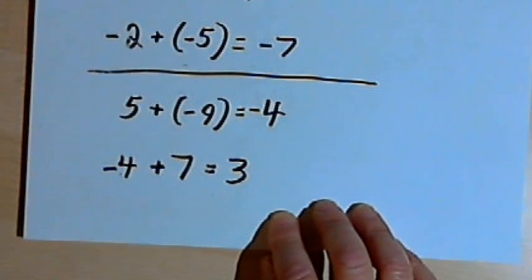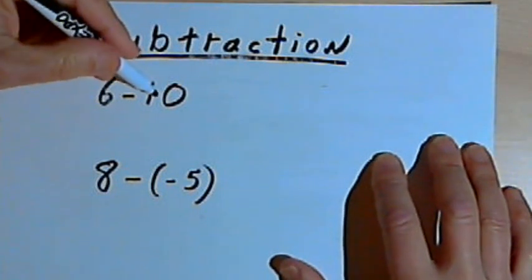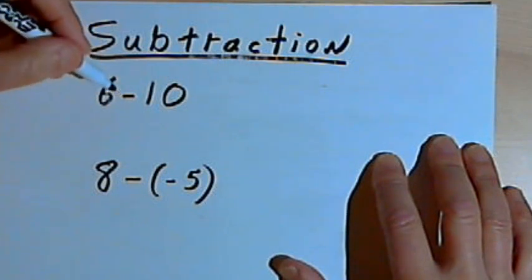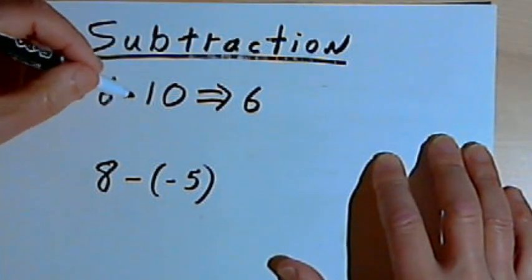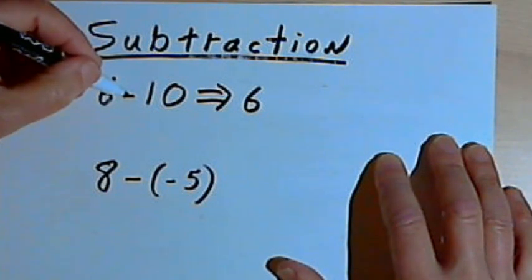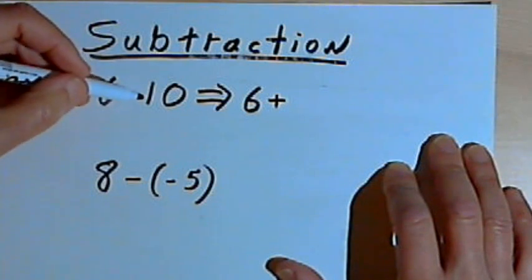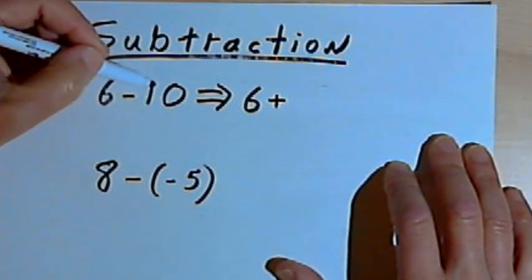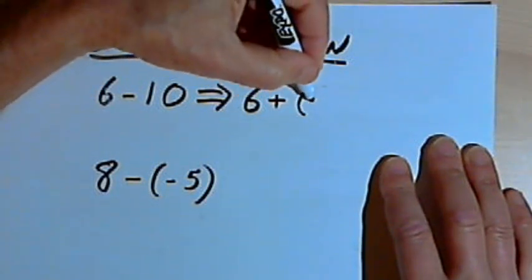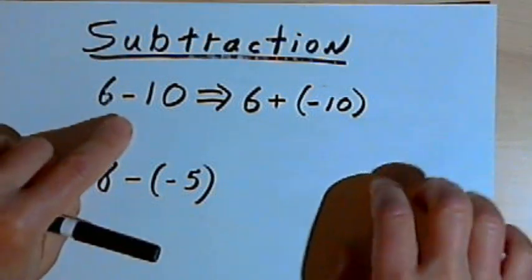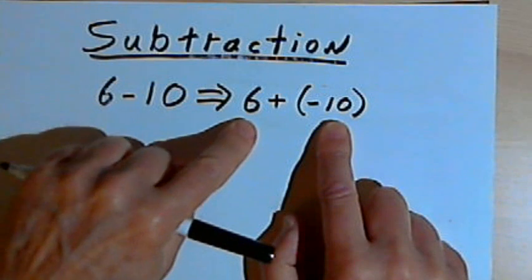So that's basically how addition works. Now subtraction is going to be easy once you understand addition. Here I've got 6 minus 10. What I'm going to do is turn it into an addition problem. I'm going to write the 6, and then since this was a subtraction problem, I'm going to do the opposite of subtraction, which is addition. So I've got 6 plus. To compensate, I'm going to take the opposite of the number I was subtracting — I was subtracting 10, and the opposite of 10 is negative 10. So now I've got 6 plus negative 10.